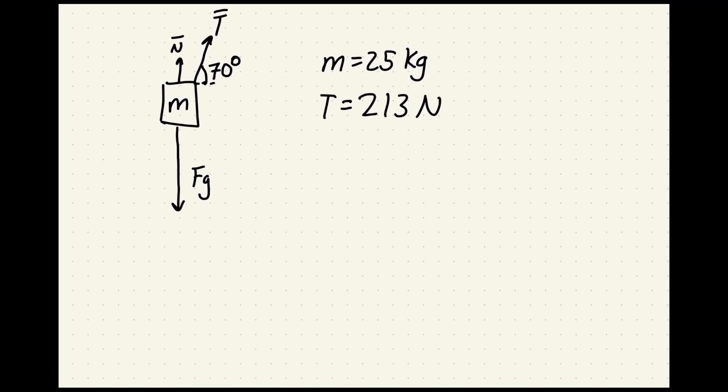But we have a mass of 25 kilograms, and let's assume that this is on a horizontal surface so there will be a normal force pointing directly up and our tension force. Maybe we attach a string to it and we pull upwards with a Newton meter and I measure this value of 213 Newtons for my tension force at an angle of 70 degrees above the horizontal x-axis.